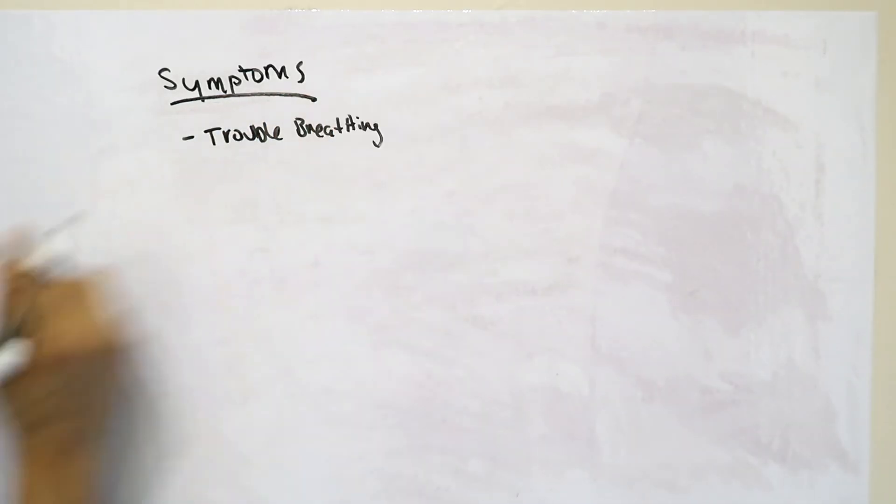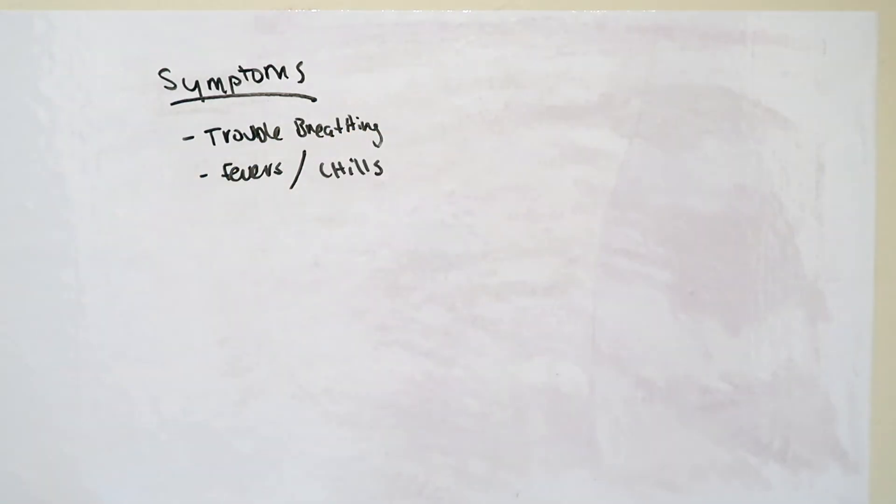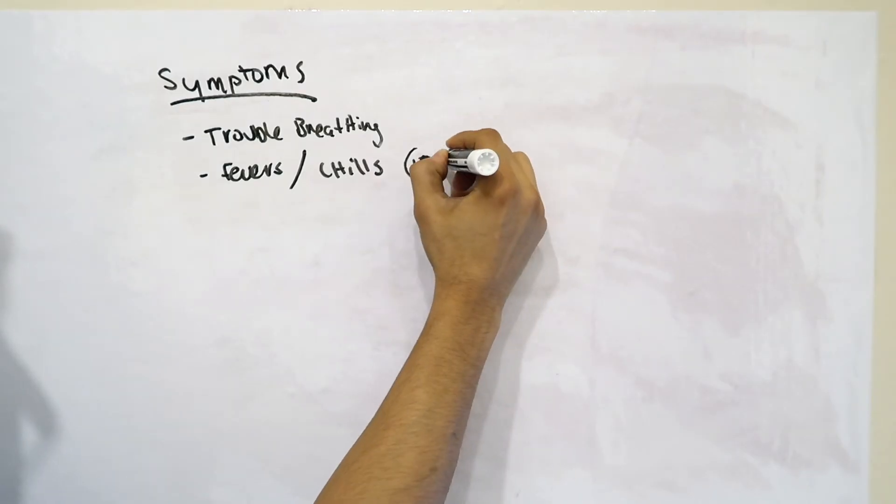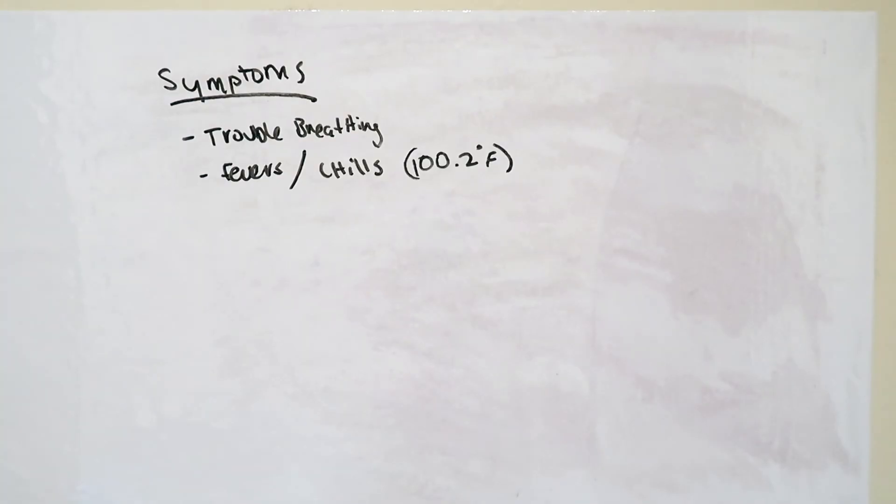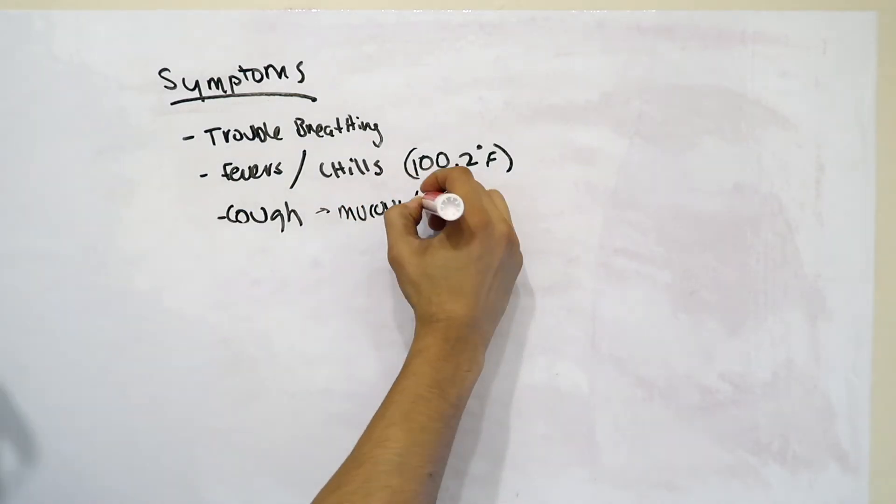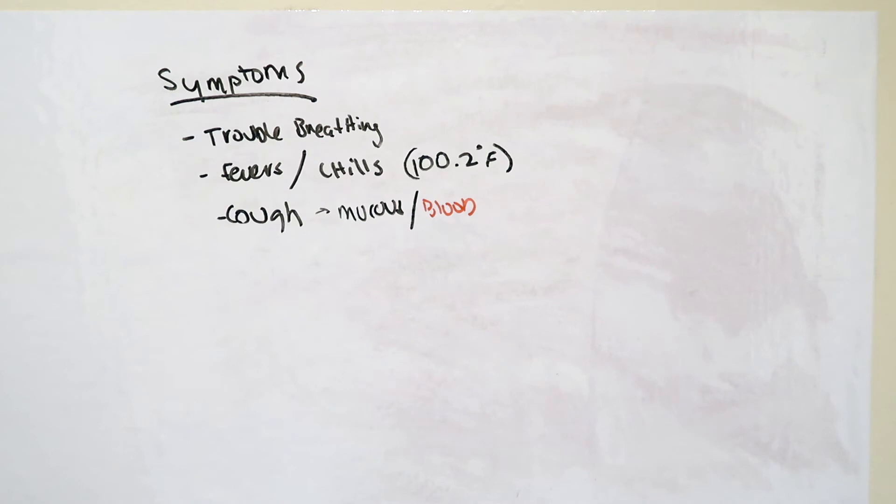So what are some of the symptoms of pneumonia? Well, first, one of the most common symptoms is trouble breathing. Because of the decreased ability of the lungs to exchange oxygen due to the infection, other common symptoms include fevers and chills, with a fever being defined as a body temperature over 100.2 degrees Fahrenheit. Patients often have a cough and can produce mucus and, rarely, blood-tinged sputum, and the most common symptom being fatigue, which is experienced by over 90% of patients with a pneumonia. Slightly less commonly, patients experience chest pain.